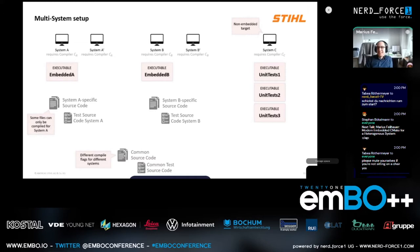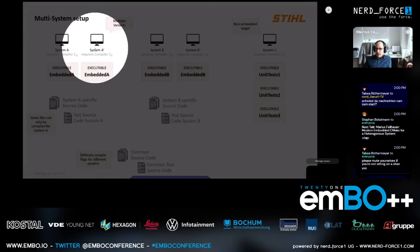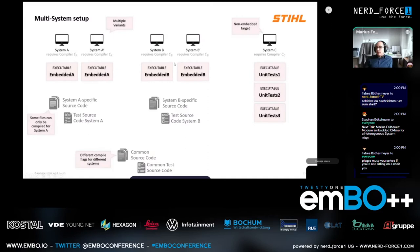To make it more complicated, we have variants. We have system A-dash and system B-dash, which are almost the same as system A and B but not exactly — there are some minor specifics for those variants and we want to build them too. We want a similar executable, named embedded A and embedded A for both system A and system A-dash.